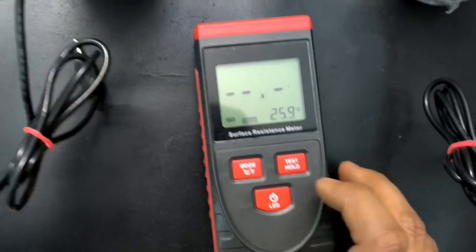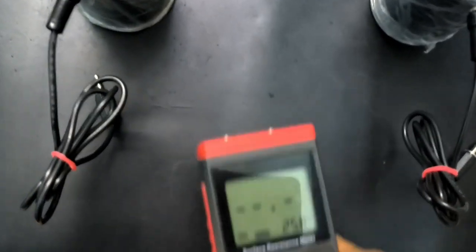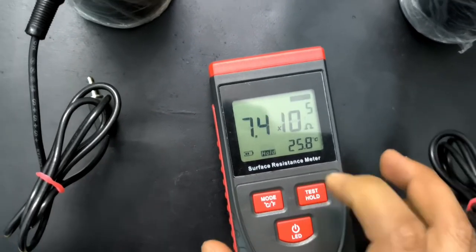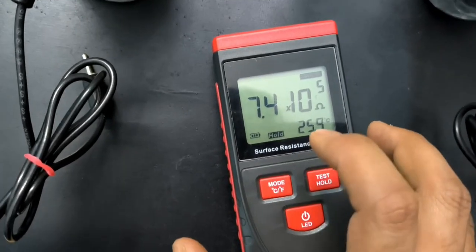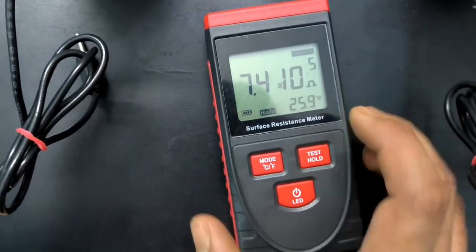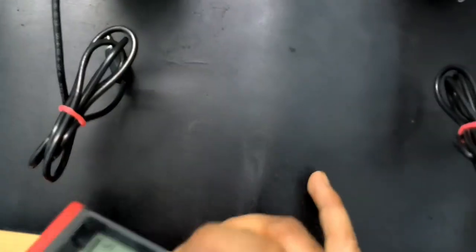Now to check if the product is ESD or not, you have to press and hold. It's showing 10^5. You have to check here - this one, it's 10^5. As you can see, this is conductive.